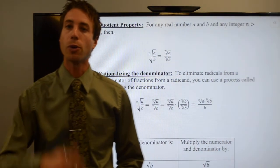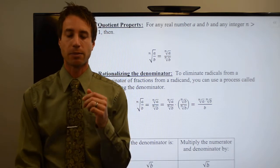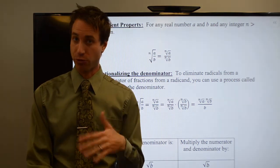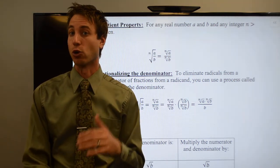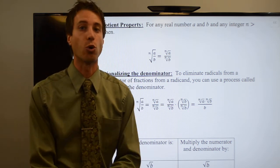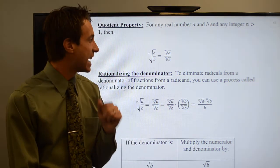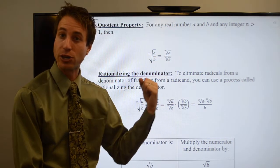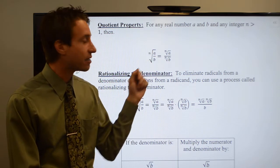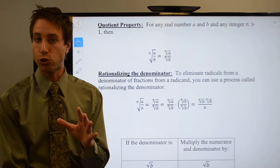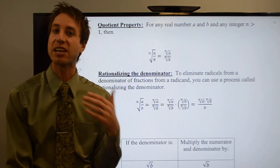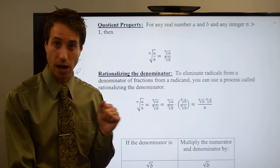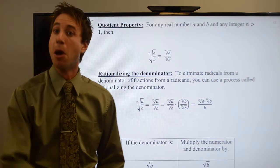Welcome to this page of the notes. We're going to take a look at another technique you may need to use to help you simplify nth roots or radical expressions, and it has to do with the quotient property. In some cases, you're going to be taking the nth root of a fraction — the nth root of a divided by b. The quotient property of radicals says all you need to do is take the nth root of the top and the nth root of the bottom.